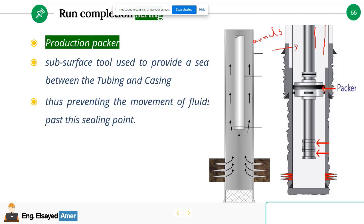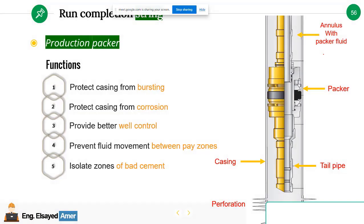So the function that the packer will do in the completion string is to seal between the tubing and the annulus and prevent any movement of reservoir fluid in this area. So the reservoir fluid will pass from the perforation into the tubing or lower completion, passing through the packer and go up to the surface to the Christmas tree or the well head.